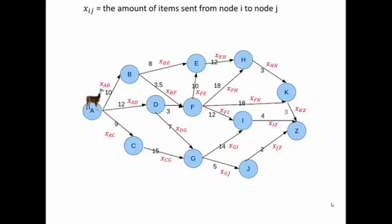Let's start with our decision variables. Xij is equal to the amount of items sent from node i to node j. In relation to our problem, this model has an entire network, and there's a decision variable for each and every one of our arcs. We need to know how many llamas are going to be traveling from A to B, so there's an X sub AB, and from A to D, so there's an X sub AD. There's an X decision variable for every single arc, so we know how much is traveling along the path from node i to node j.